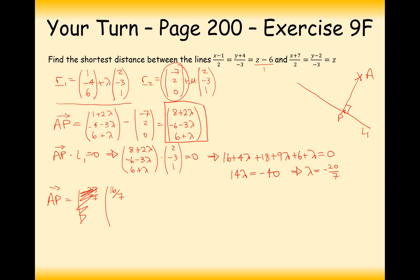And the next one is going to be minus 6 minus 3 lambda. So minus 6 minus 3 lots of this lambda value, that's 18 over 7. And then the final one is going to be 6 plus this lambda value. So in this case here, we're going to get 22 over 7.